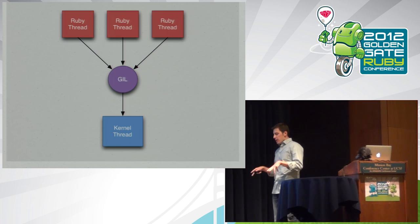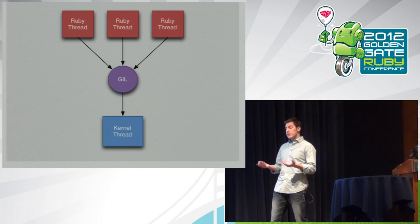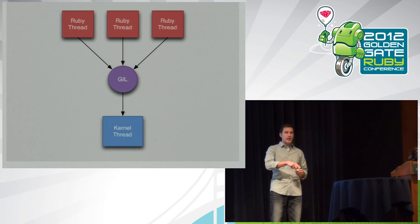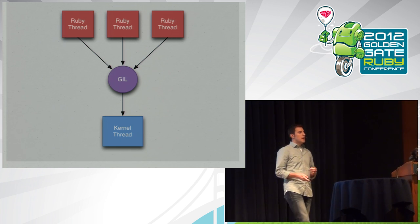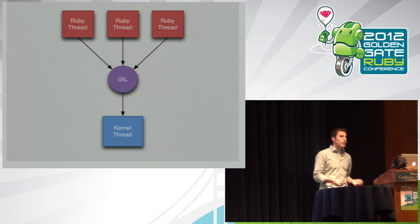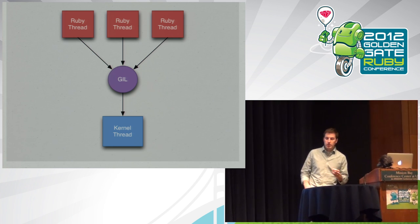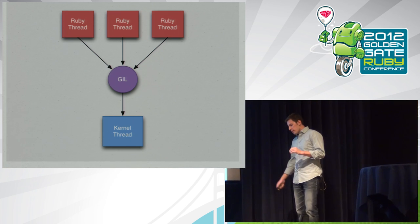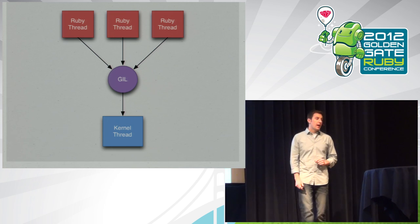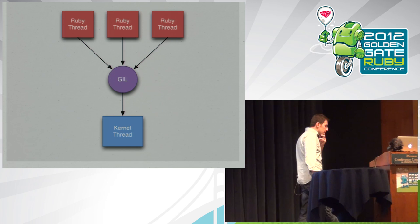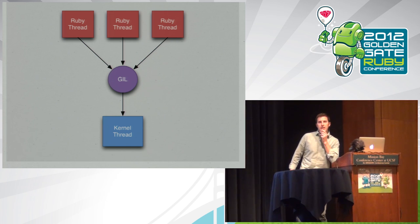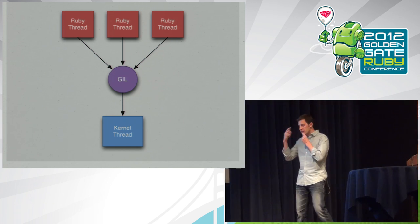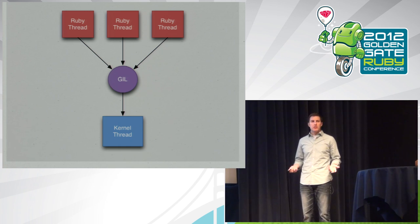If we were to analyze each of these problems and dig down to find the root cause, we'd see that it's the global interpreter lock. This is a mechanism in the MRI runtime that maps multiple Ruby threads to a single kernel thread such that only one is running at a time, effectively making the runtime single-threaded. At RubyConf last year in New Orleans, someone asked Matz, 'Will we ever get rid of the GIL?' And Matz's answer was essentially no. He said, 'I don't want it to be that kind of platform.' And for me, when he said that, I finally understood why the GIL is there.